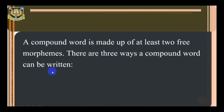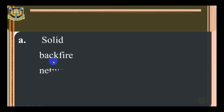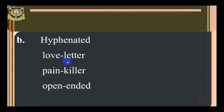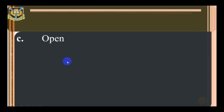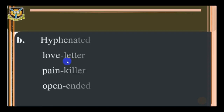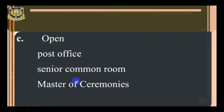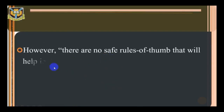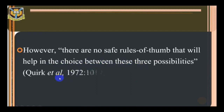There are three ways a compound word can be written: A) solid, for example backfire, network, passbook; B) hyphenated, for example love-letter, painkiller, open-ended; and C) open, for example post office, senior common room, master of ceremony. However, there are no safe rules of thumb that will help in the choice between these three possibilities.